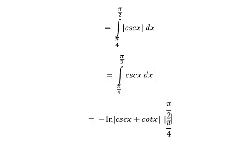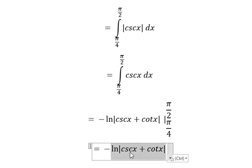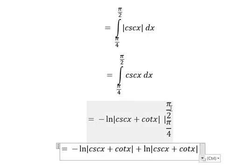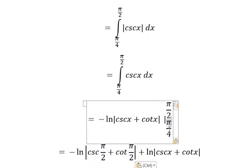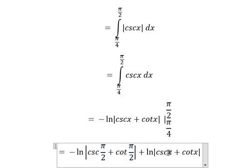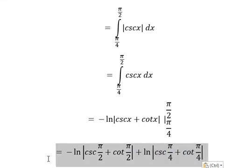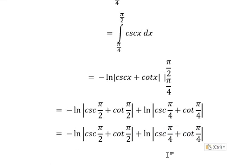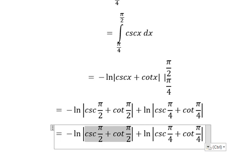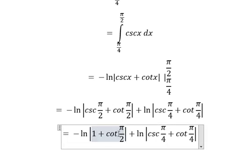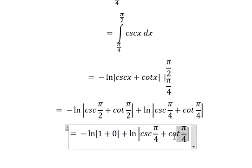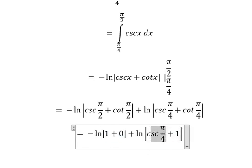Now we have the final answer. At π/2, we have 1 and 0. At π/4, we have 1 and the square root of 2.